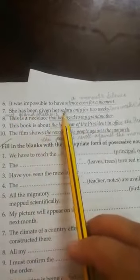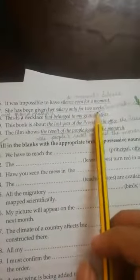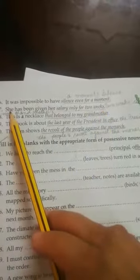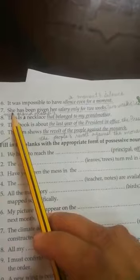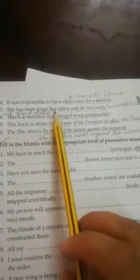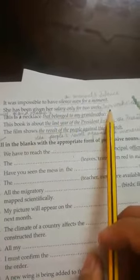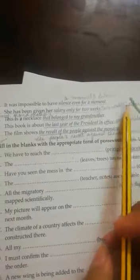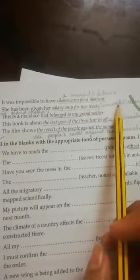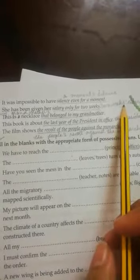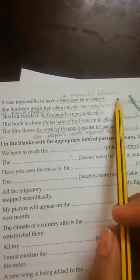She has been given her salary only for two weeks. The possessive form will be, she has been given her two weeks' salary. Here, we will place our apostrophe after an S because it is already plural.